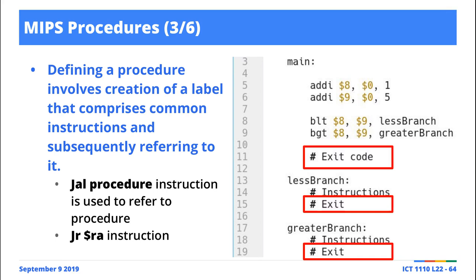In terms of how procedures work in MIPS, it's pretty easy. The first thing you need to do is define the procedure — you give it a name. For you to make reference to the procedure, you need to use a name, and you do that using a label. This is a user-defined name; it could be anything, though it's always a good idea to use more descriptive names. After the label you have the full colon — a label is always followed by a full colon — and then you write the implementation of that particular method.